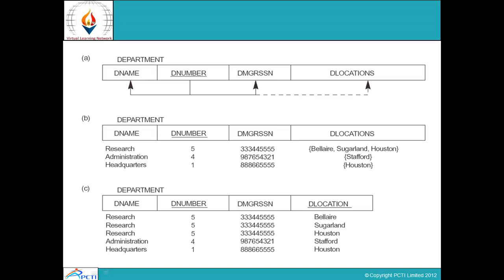In first normal form, a single cell cannot contain multiple values — there should be only one value. So it is converted into first normal form. The following diagram is under first normal form; the diagram above is before first normal form. Applying the rule that multi-values should be in separate rows, 'Research' is repeated three times, corresponding to the three location values. The main rule of first normal form is that one cell must not contain more than one value, so the row is repeated and the data appears three times.